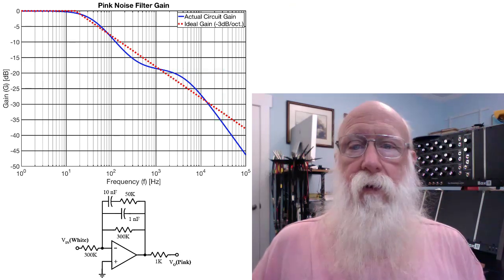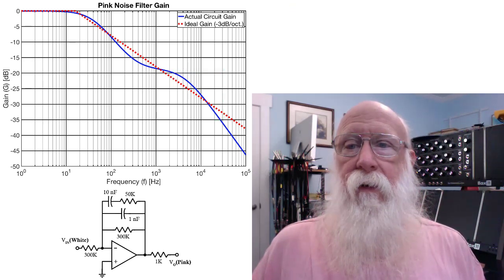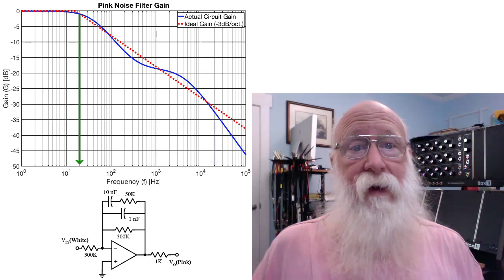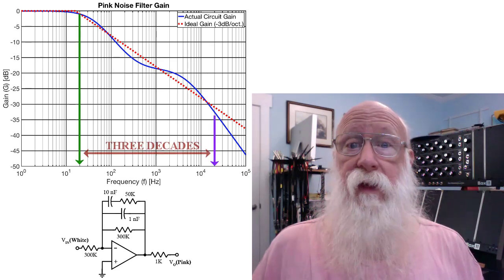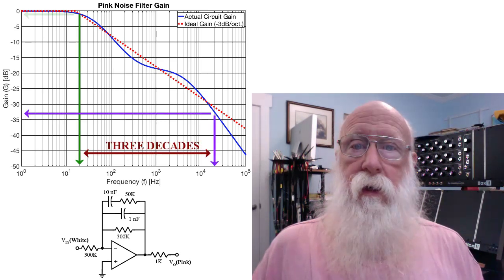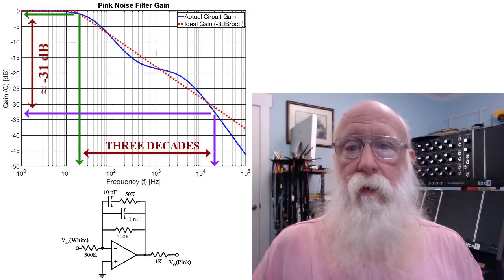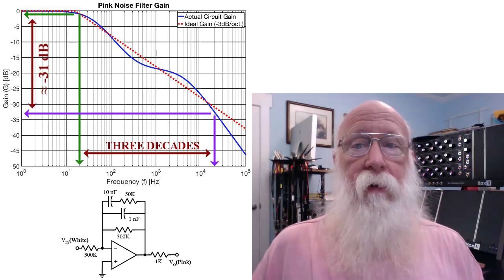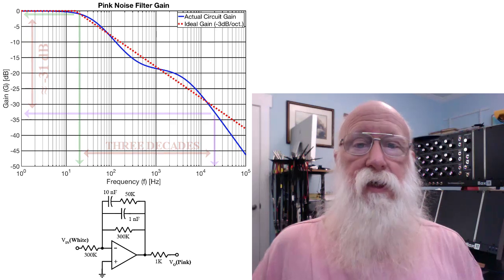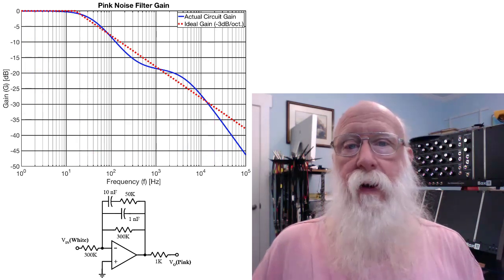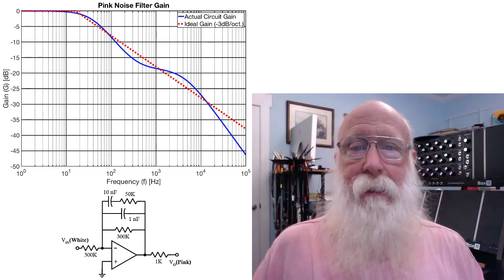If you look at the overall response of this circuit, if you compare 20 hertz to 20,000 hertz, you'll see that the total decrease in gain is just over 30 dB, which is what we were after. And nowhere does the actual response stray too far from our ideal minus 3 dB per octave.